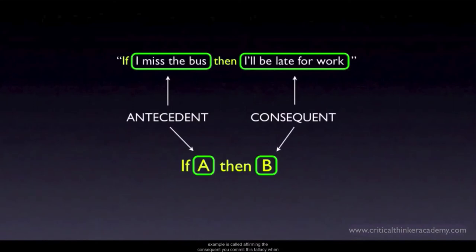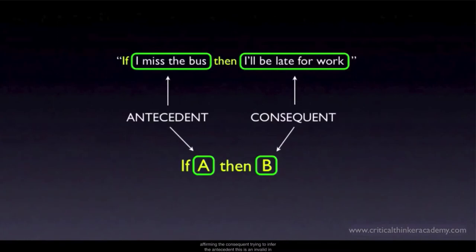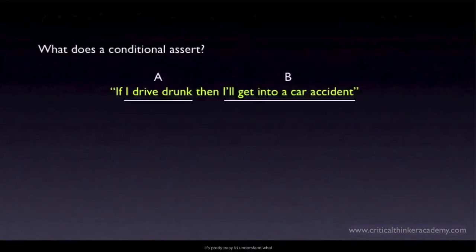You commit the fallacy of affirming the consequent when you're given a conditional like this and assume, from the fact that I was late for work, that I must have missed the bus. You're affirming the consequent and trying to infer the antecedent. This is an invalid inference, and the name for the fallacy, which you'll find in any logic or critical thinking textbook, is affirming the consequent.